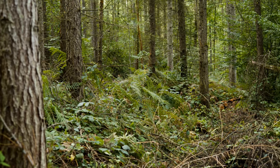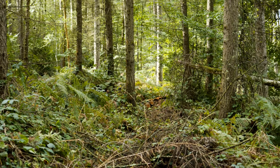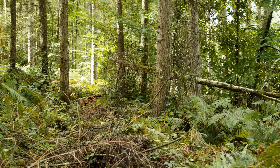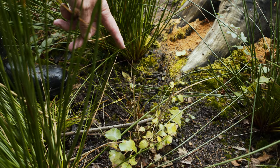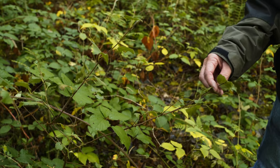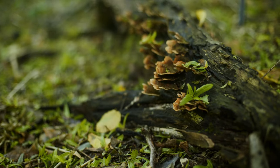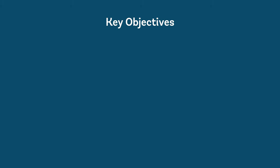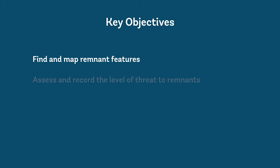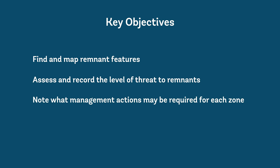Ensure areas under dense bracken and bramble are investigated at a suitable time of year. While a record of woodland remnants is central to the restoration process, it need not involve an extremely detailed ecological survey. The main aim is to get enough information about the whereabouts and condition of remnants to make management decisions and prioritise action. The key objectives are to find and map remnant features, map notable features such as archaeological remains or ancient trees, assess and record the level of threat to remnants, and note what management actions may be required for each zone, providing a baseline for monitoring.